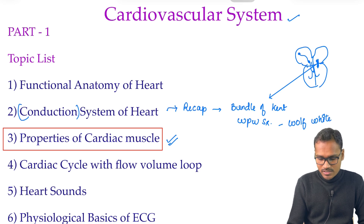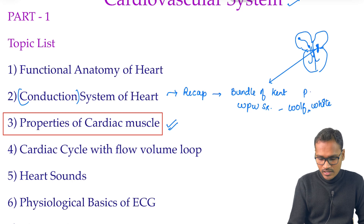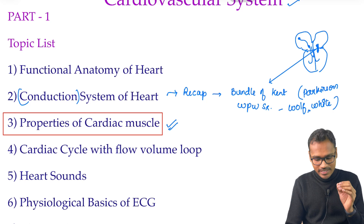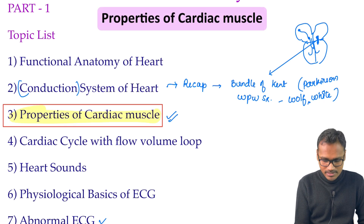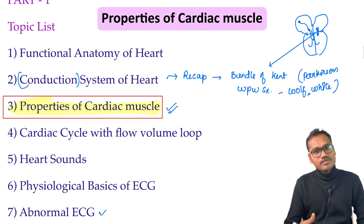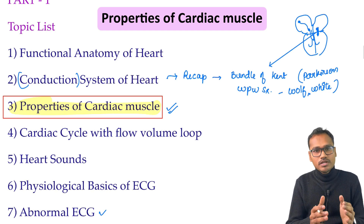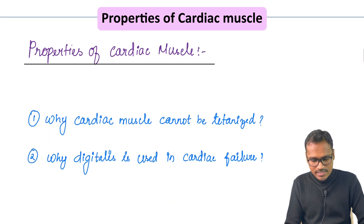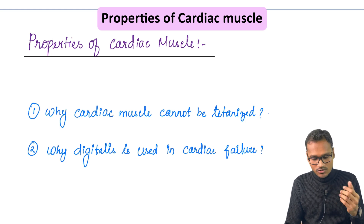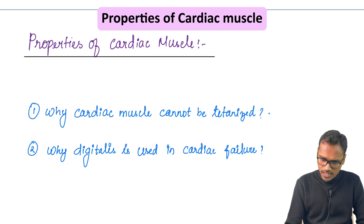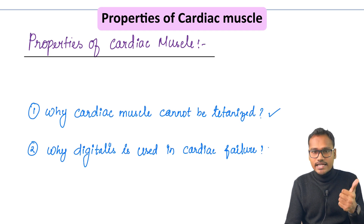So those were the two questions asked previously — bundle of Kent and Wolff-Parkinson-White syndrome. This syndrome has specific ECG findings which we will discuss in our abnormal ECG section. Now let's get down to today's topic: the properties of cardiac muscle. There are two important 'give reason' questions: why the cardiac muscle cannot be tetanized, and why digitalis is used in cardiac failure.